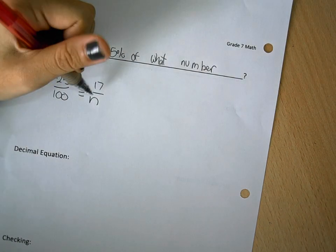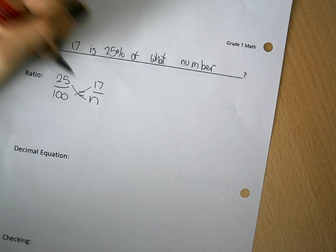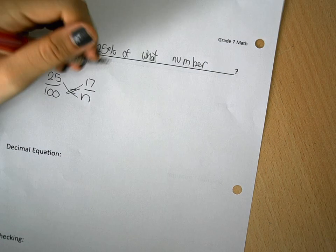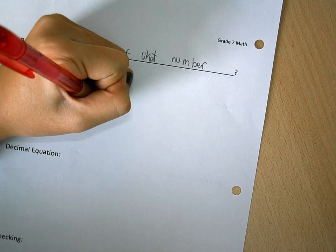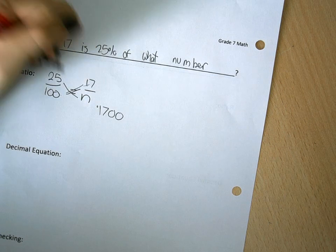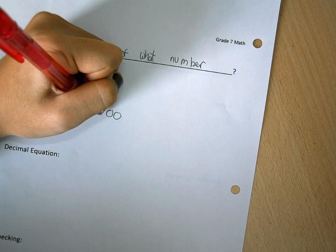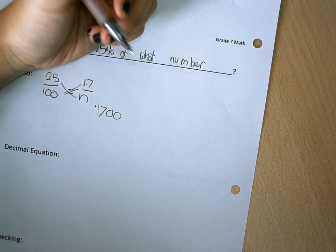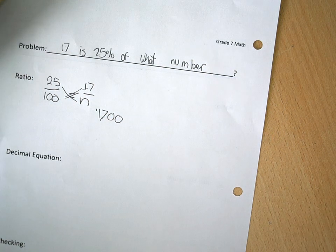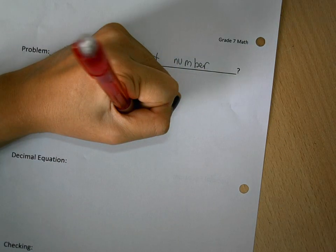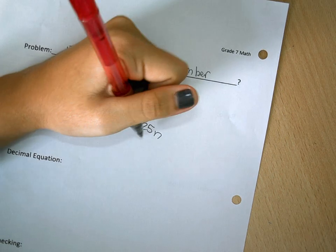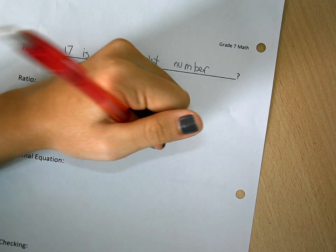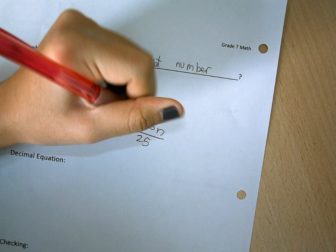So now you are going to cross multiply, which is 17 times 100, and then it leads to 25n, because these are multiplied by each other. So we're going to take both divided by 25.